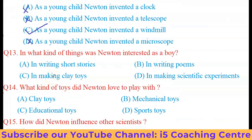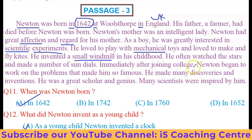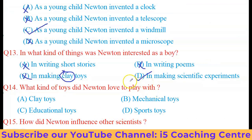Question 13: In what kind of things was Newton interested as a boy? Option A — writing short stories: not mentioned, so wrong. Option B — writing poems: also not mentioned. Option C — making clay toys: clay toys are not referred to, only mechanical toys, so wrong. Option D — making scientific experiments. From the passage: 'As a boy, he was greatly interested in scientific experiments.' So option D is the right one.